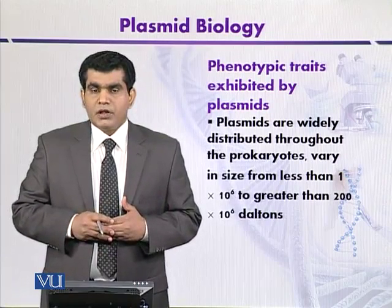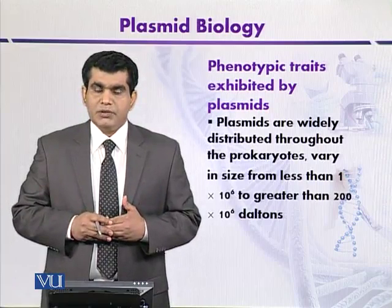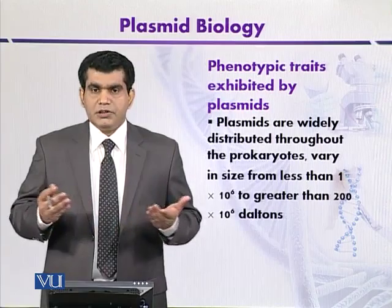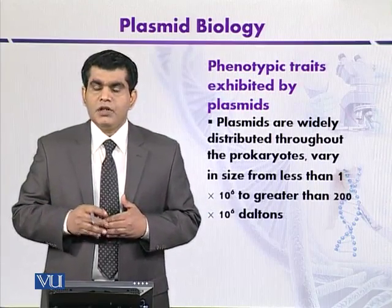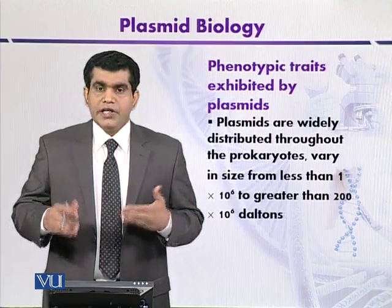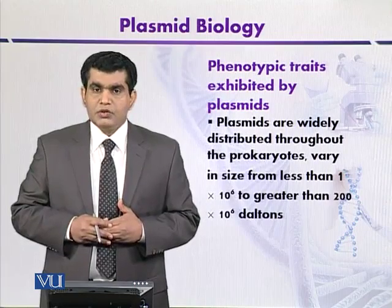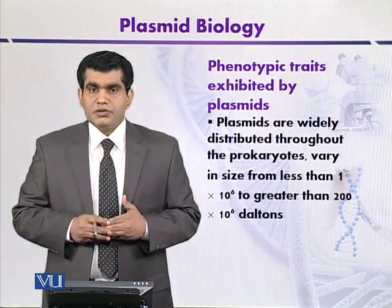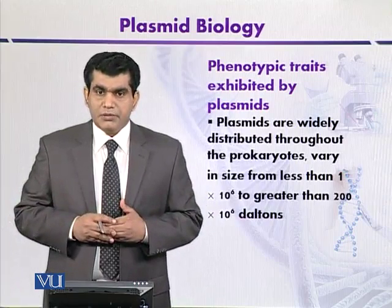In addition to that, there are some proteins that are toxic in nature, such as enterotoxins. Toxic proteins like hemolysins are also produced by certain microbes that contain plasmids. Such proteins like hemolysins, if they are produced, can degrade the red blood cells.